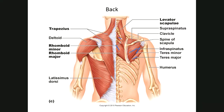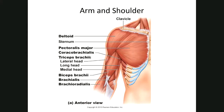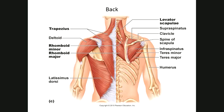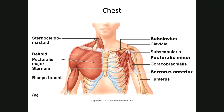Here we have rhomboid minor, rhomboid major, teres major, teres minor, infraspinatus, and supraspinatus. The muscles that make up the rotator cuff are the supraspinatus, infraspinatus, teres minor, and then there's an anterior muscle — subscapularis — which is just hard to see under the scapula here.